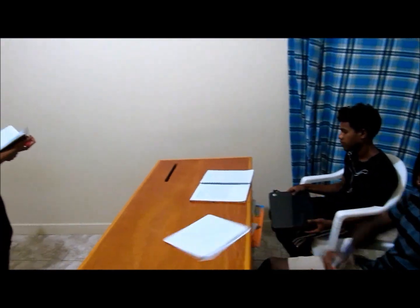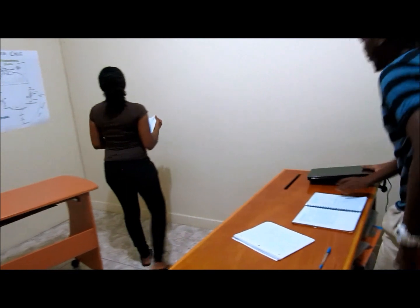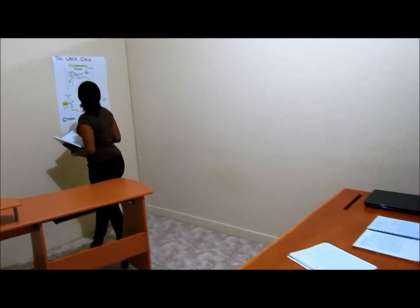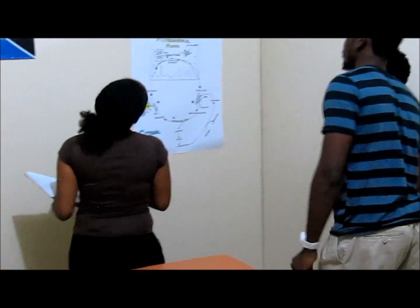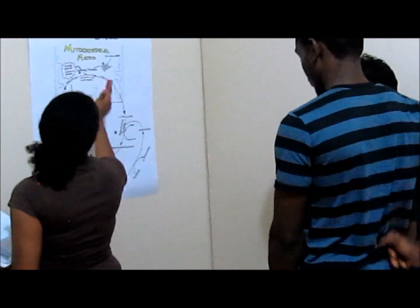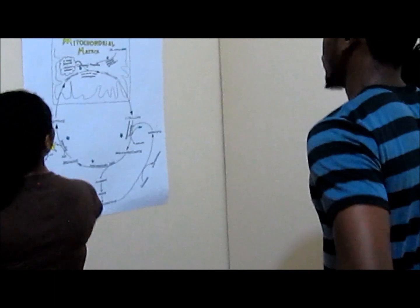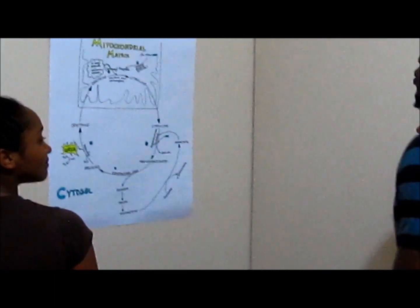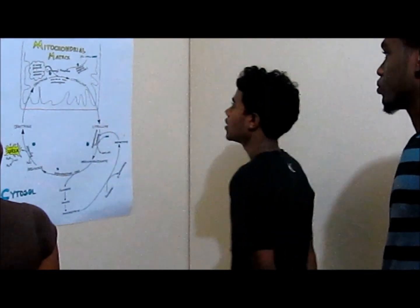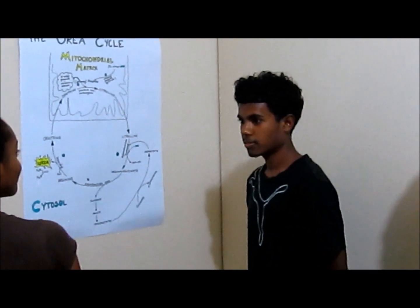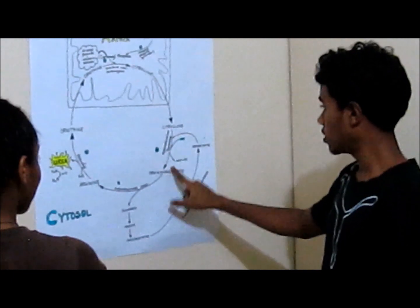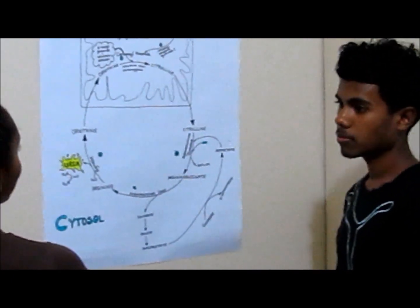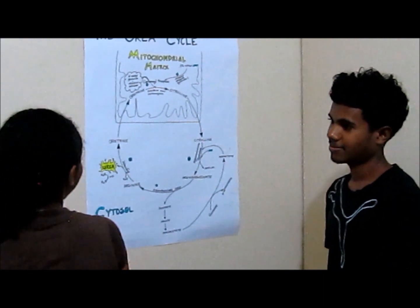Join me up here. How many ATP molecules are used in one turn of the cycle to make one molecule of urea? In the mitochondrial matrix, two ATP molecules are used, and in the cytosol, one ATP molecule is used. So three in all — two plus one equals three. Very good.